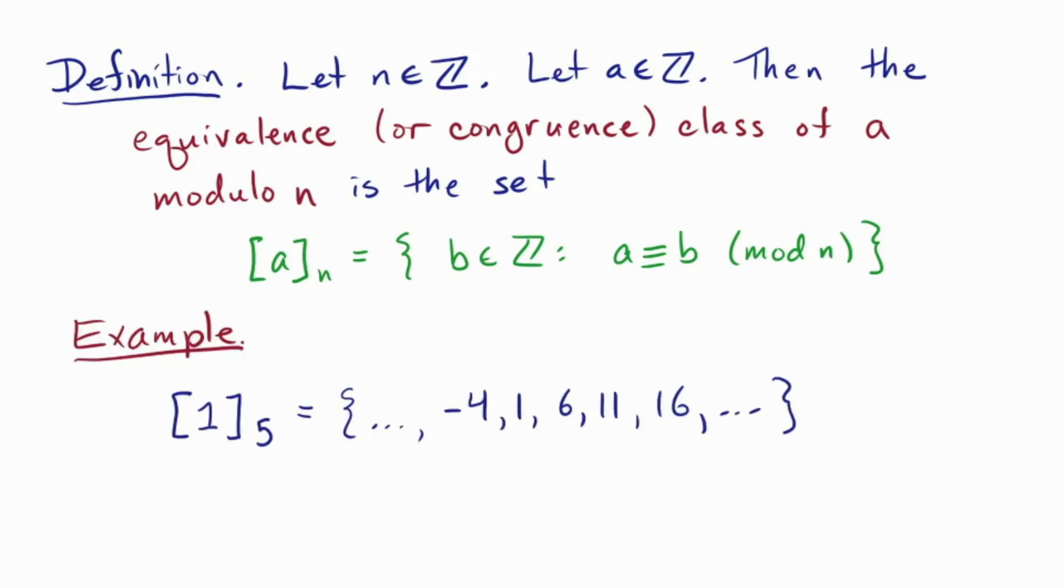For example, the equivalence class of 1 modulo 5 is an infinite collection that has this pattern: minus 4, 1, 6, 11, 16, and so on in both directions. Another name for the same equivalence class is the equivalence class of 6 modulo 5, or the equivalence class of minus 4 modulo 5. Any of the elements of the equivalence class can be used as its name because they all define the same ray.